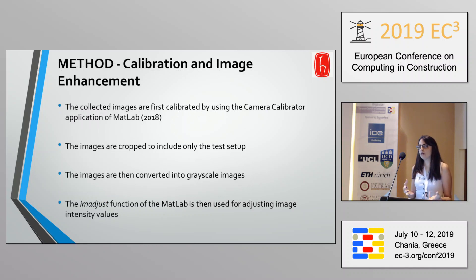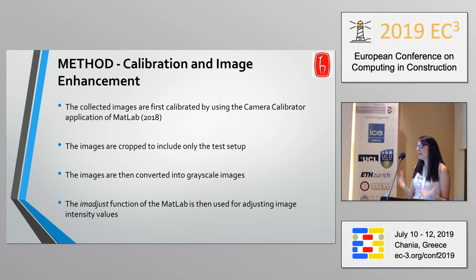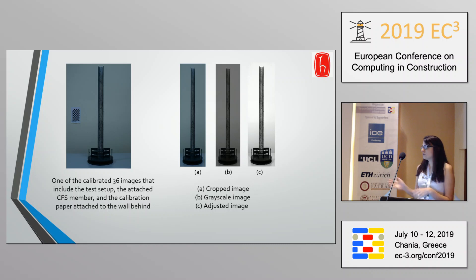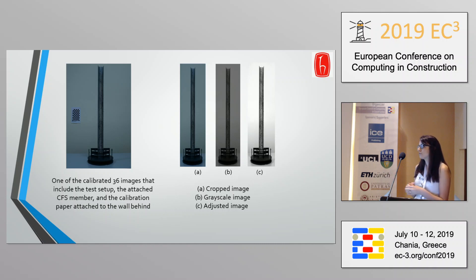Once we collected the images, we calibrated and enhanced them using the MATLAB calibration tool with a checkerboard on the side. We then cropped the images and changed the intensity values to get a better image. On the left hand side you can see the first image doesn't have much lighting because the metal surface shines, but we sprayed a black paint pattern on it so we can combine the images to generate the 3D model.